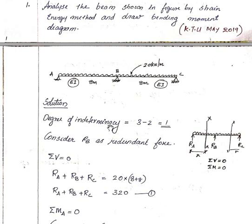To calculate the degree of indeterminacy: degree of indeterminacy = number of unknowns minus number of equilibrium equations. Here we have three unknowns — reaction at A, reaction at B, and reaction at C. With two equilibrium equations (sigma V = 0 and sigma M = 0), the degree of indeterminacy equals 3 minus 2, which equals 1. This is a single degree of indeterminacy.